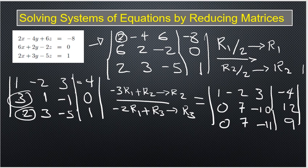To eliminate the 2 in R3, we compute -2×R1 + R3 → R3. That gives: -2×1+2=0, -2×(-2)+3=7, -2×3+(-5)=-11, and -2×(-4)+1=9. So the new R3 is [0, 7, -11 | 9]. Now the first entries of both R2 and R3 are zero.